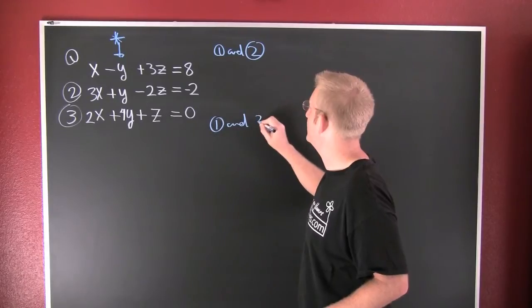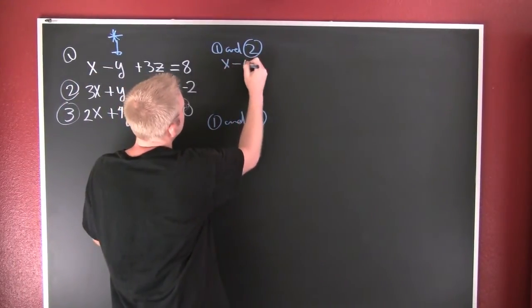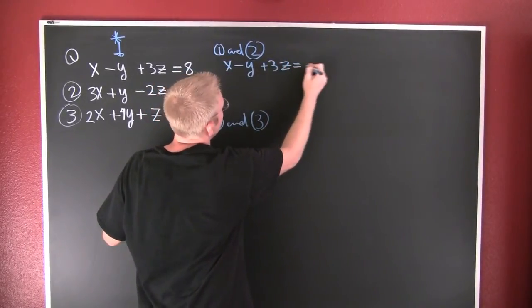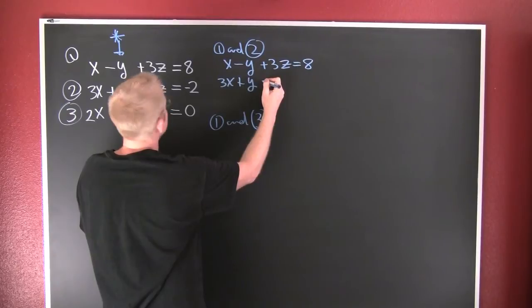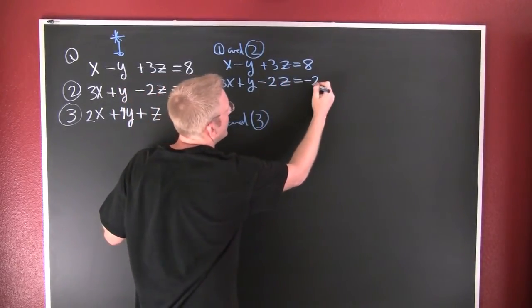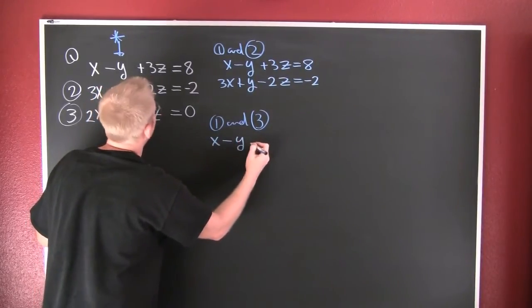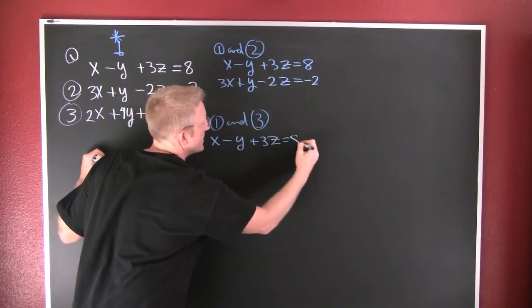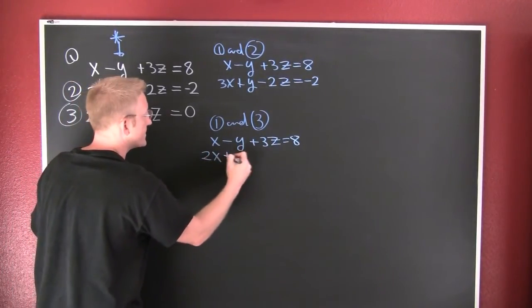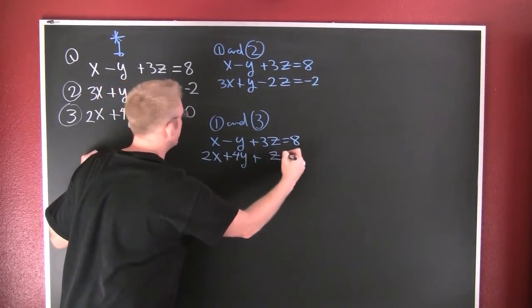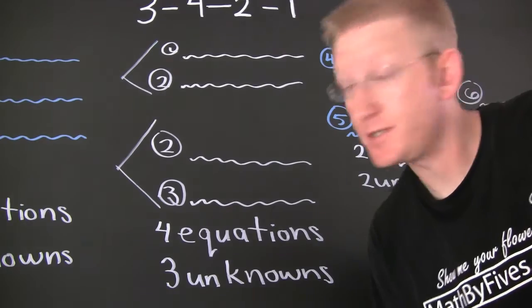Let's go ahead and rewrite those. I'm gonna have X minus Y plus 3Z equals 8, and 3X plus Y minus 2Z equals minus 2. Then down here in this pairing, I'm gonna pair one and three. This is gonna be X minus Y plus 3Z equals 8, and then this is 2X plus 4Y plus Z equals 0. Now we've separated our three equations with three unknowns into different pairings.